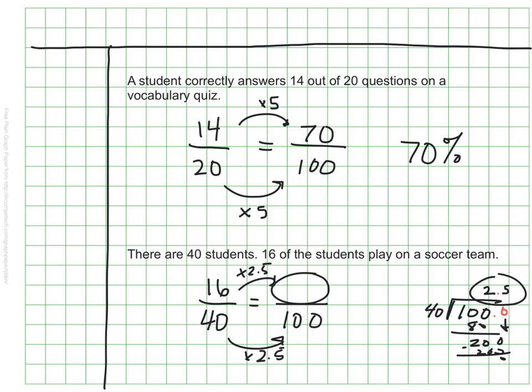Our ratio is not always going to be scaled up with a whole number. Sometimes it's with halves, or even with many messier numbers. But if I multiply sixteen by two and a half, I'll find out that the answer is forty. So, that means that forty percent of the students play on a soccer team.